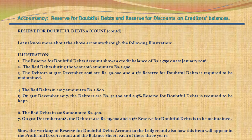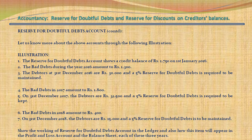Let us know more about the above accounts through the following illustration. The Reserve for Doubtful Debts Account shows a credit balance of Rs. 1,750 on 1 January 2016. The bad debts during the year 2016 amount to Rs. 1,300. The debtors at 31 December 2016 are Rs. 30,000 and 5% Reserve for Doubtful Debts is required to be maintained. The bad debts in 2017 amount to Rs. 1,800. On 31 December 2017, the debtors are Rs. 32,500 and 5% Reserve for Doubtful Debts is required to be maintained. The bad debts in 2018 amount to Rs. 400. On 31 December 2018, the debtors are Rs. 15,000 and 5% Reserve for Doubtful Debts is to be maintained. Show the working of Reserve for Doubtful Debts account in the ledger and also how this item will appear in the Profit & Loss Account and the balance sheet for each of these years.